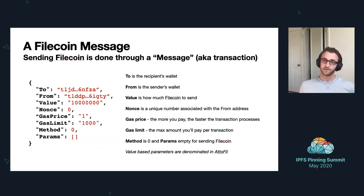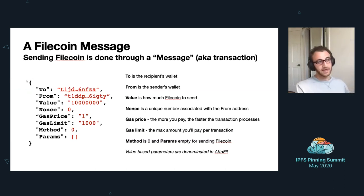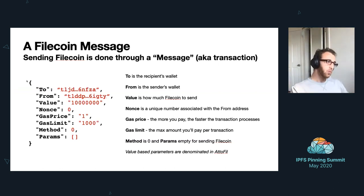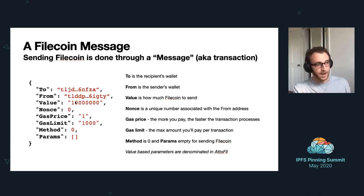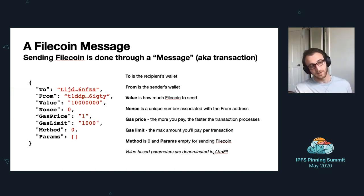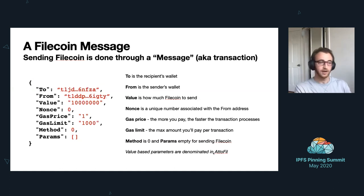Let's talk about a message. A Filecoin message is just like an Ethereum transaction — maybe there are some small differences. On the left you'll see what a message looks like in JSON, and on the right you can see all the fields defined. One thing to note is I sometimes use three dots to truncate addresses to make them easier to read. Every value-based parameter — the value, gas price, and gas limit — are denominated in something called attoFil, which is like wei to ether: a very small denomination of Filecoin, making it easier to work with small amounts without decimals.